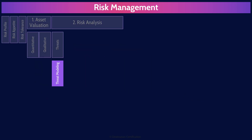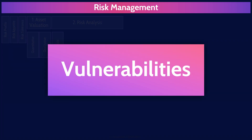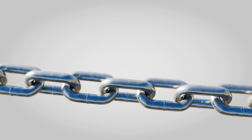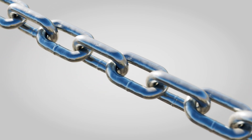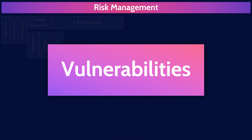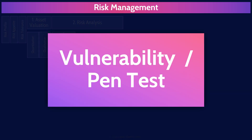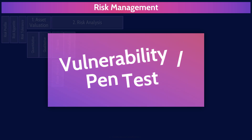Vulnerabilities are weaknesses or gaps in an organization's security or control systems that can be exploited by a threat to cause harm or damage to the organization's assets, operations, or reputation. Two techniques used to systematically identify vulnerabilities are vulnerability assessment and penetration testing, which we'll talk about in detail in the second mind map of domain four.